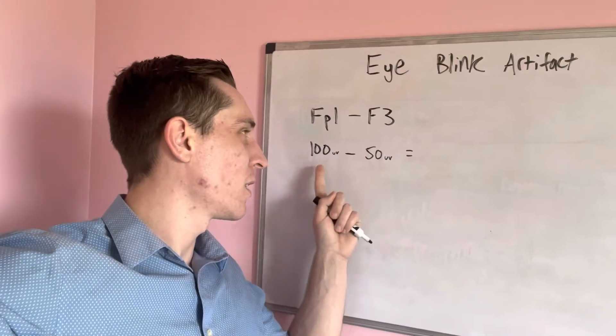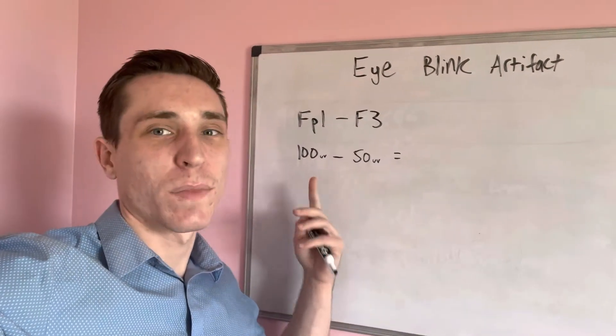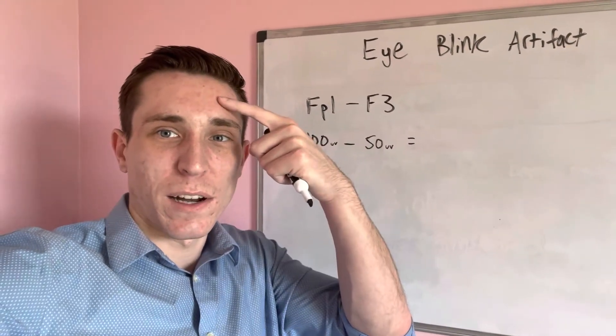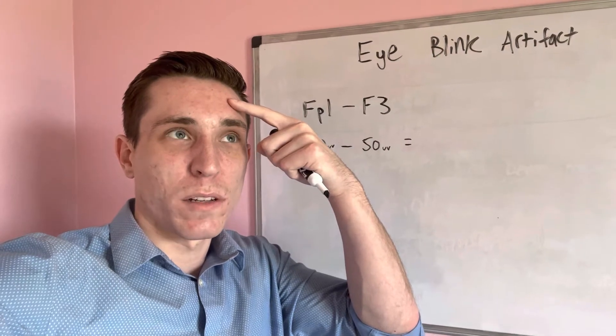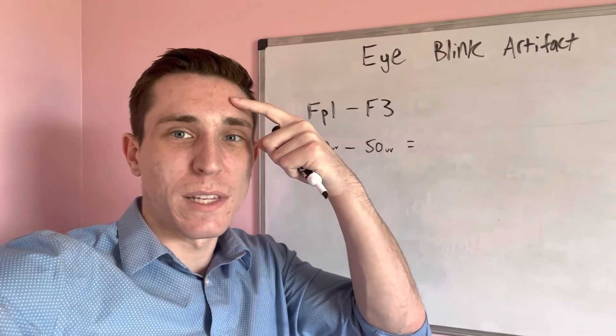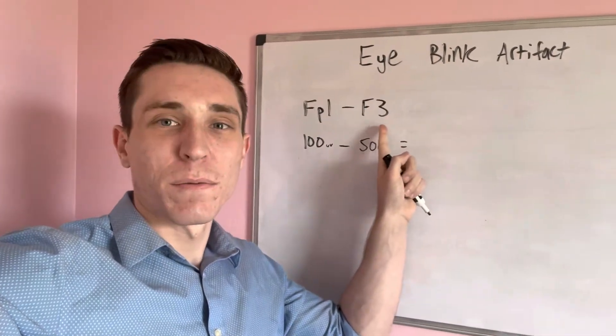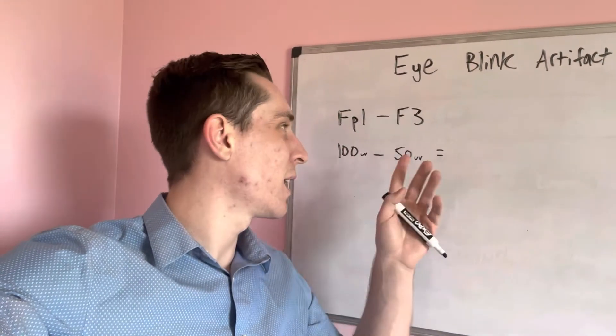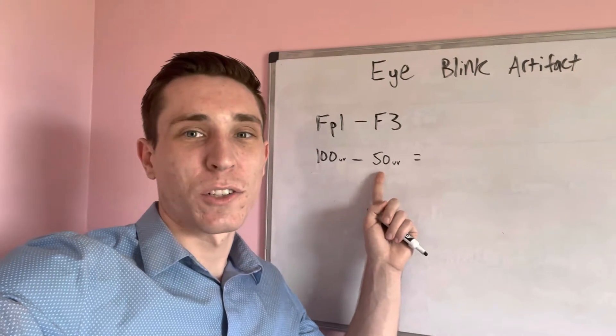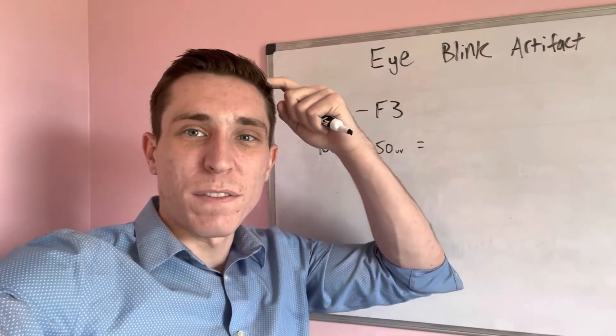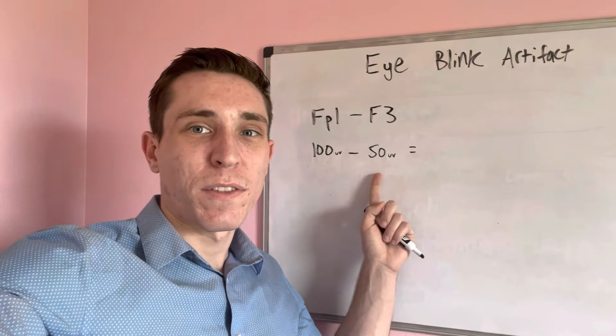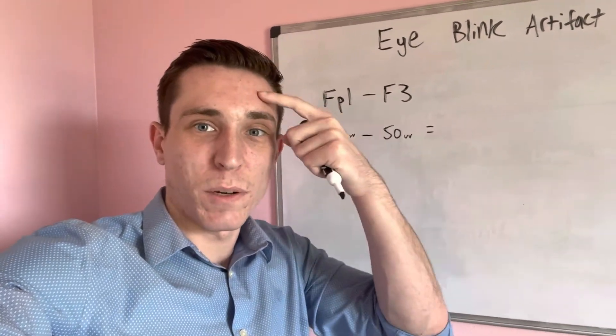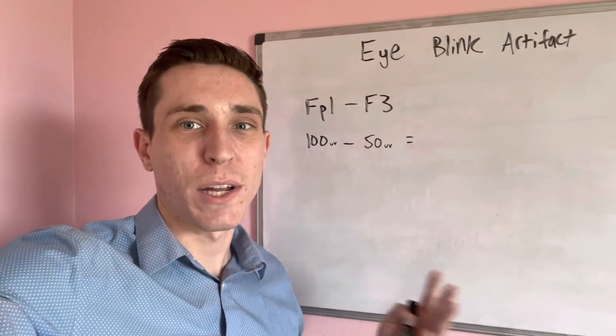FP1 is right here on the forehead, so that's going to give you, let's say, 100 microvolts, just use easy numbers. It's going to be picked up by the eye movement going up while you blink. F3 is farther up, right here, and you're going to get less electrical activity picked up. So let's say we only pick up 50 microvolts at F3 compared to FP1, which is right by the eyeball, which picks up 100 microvolts.